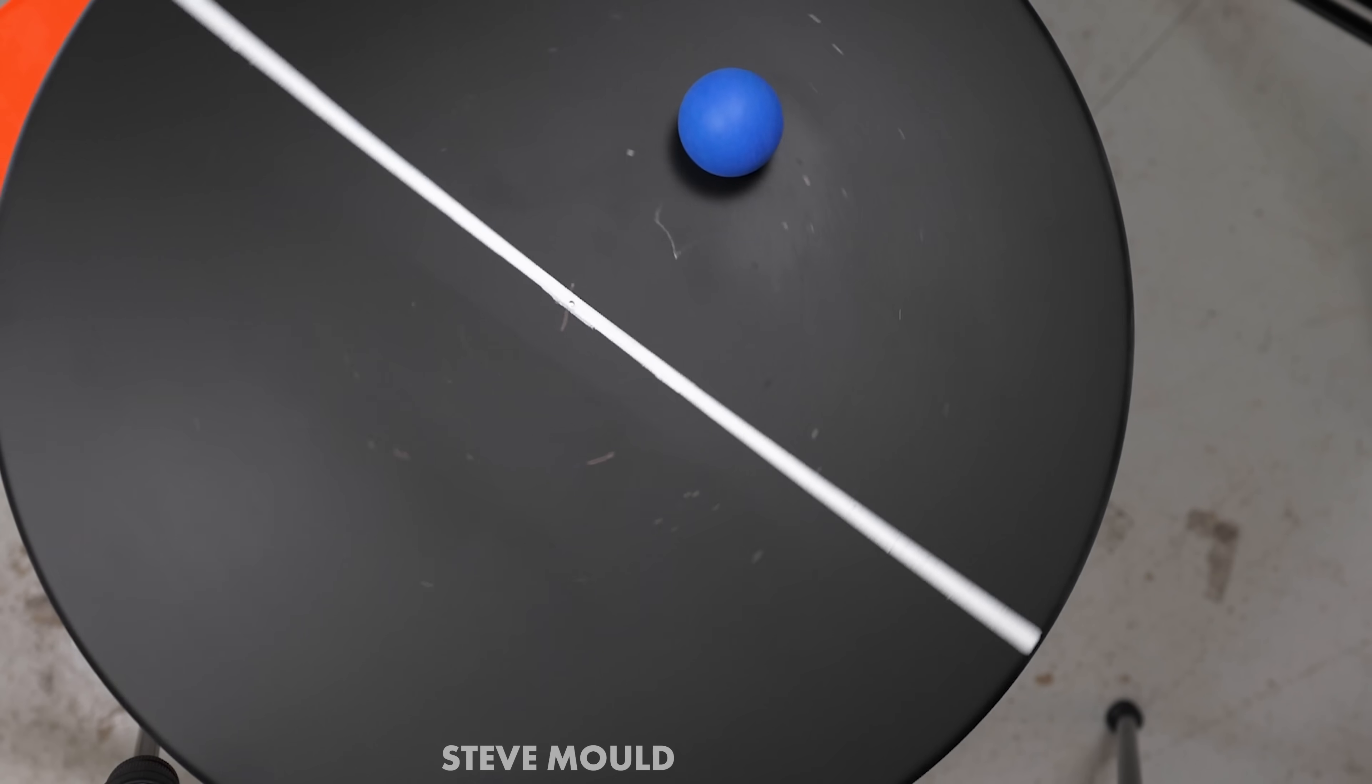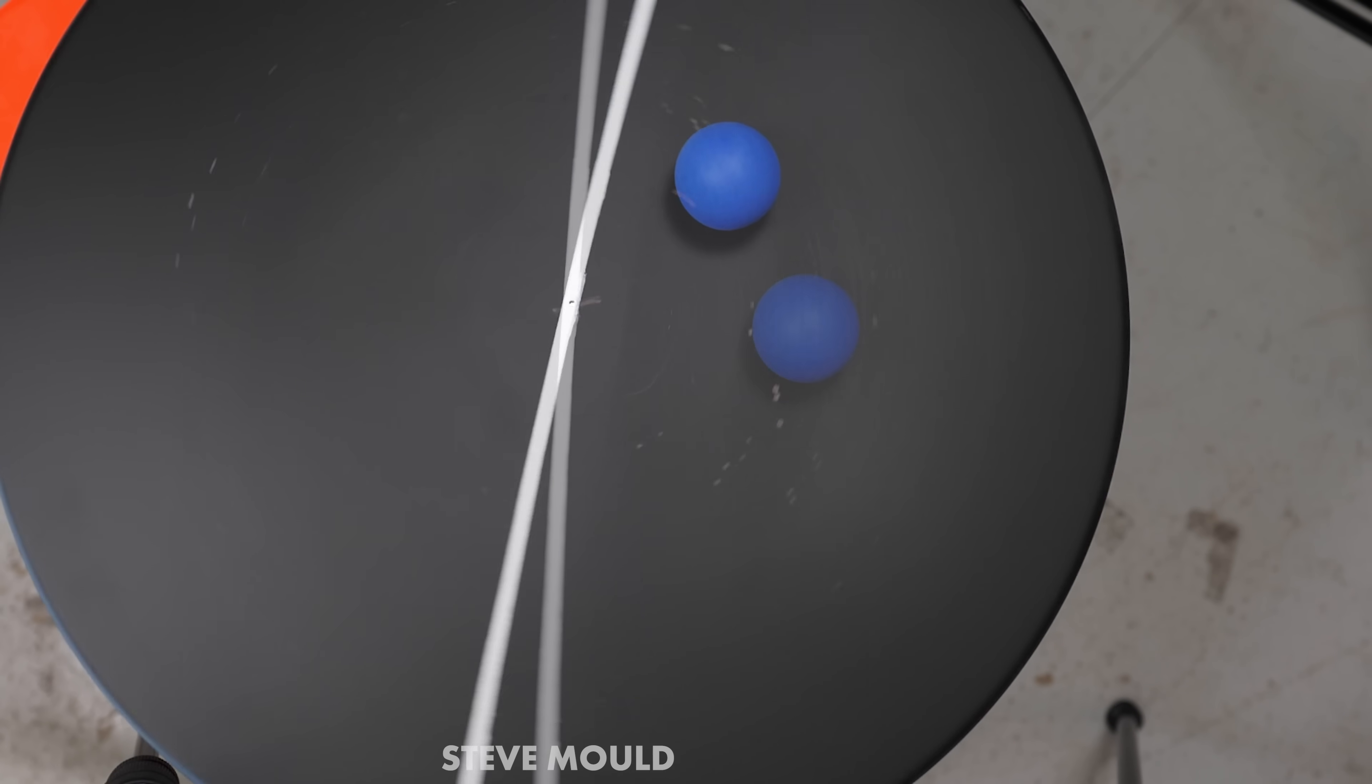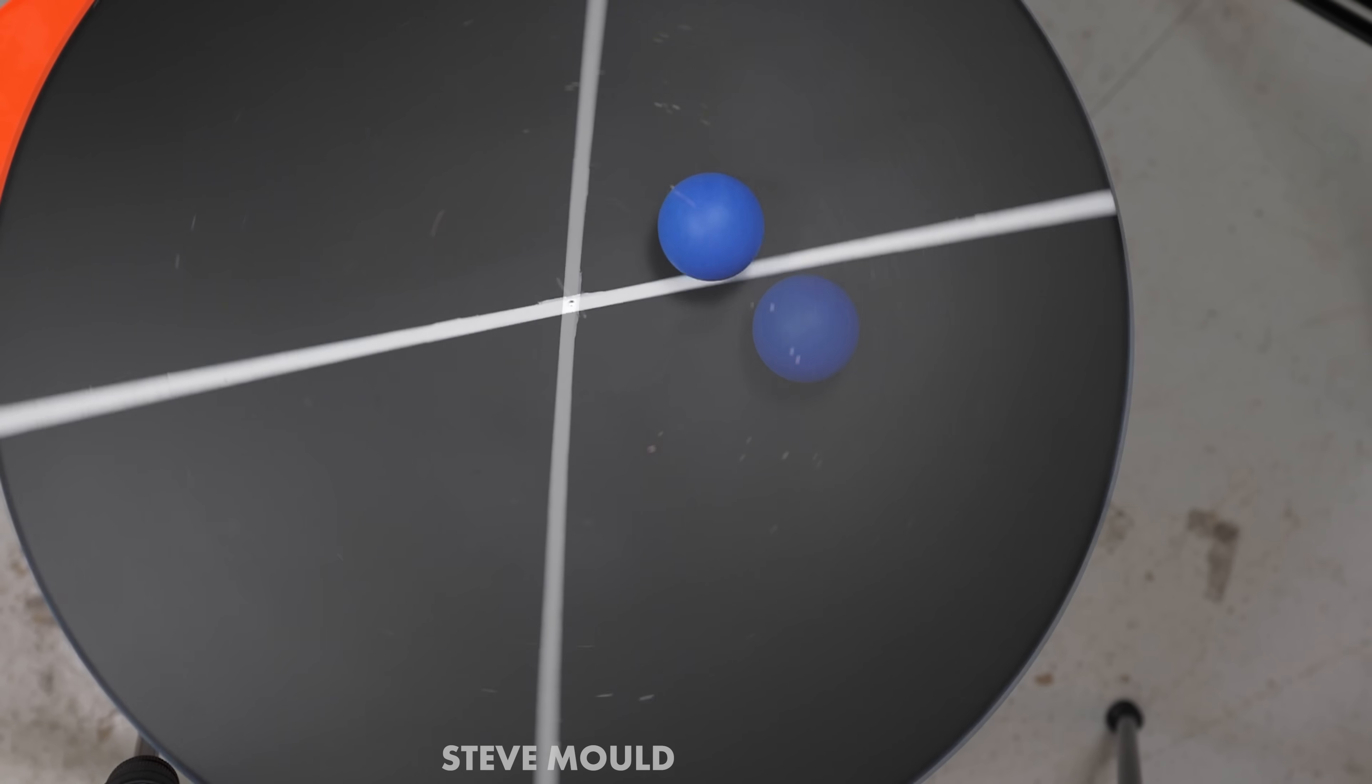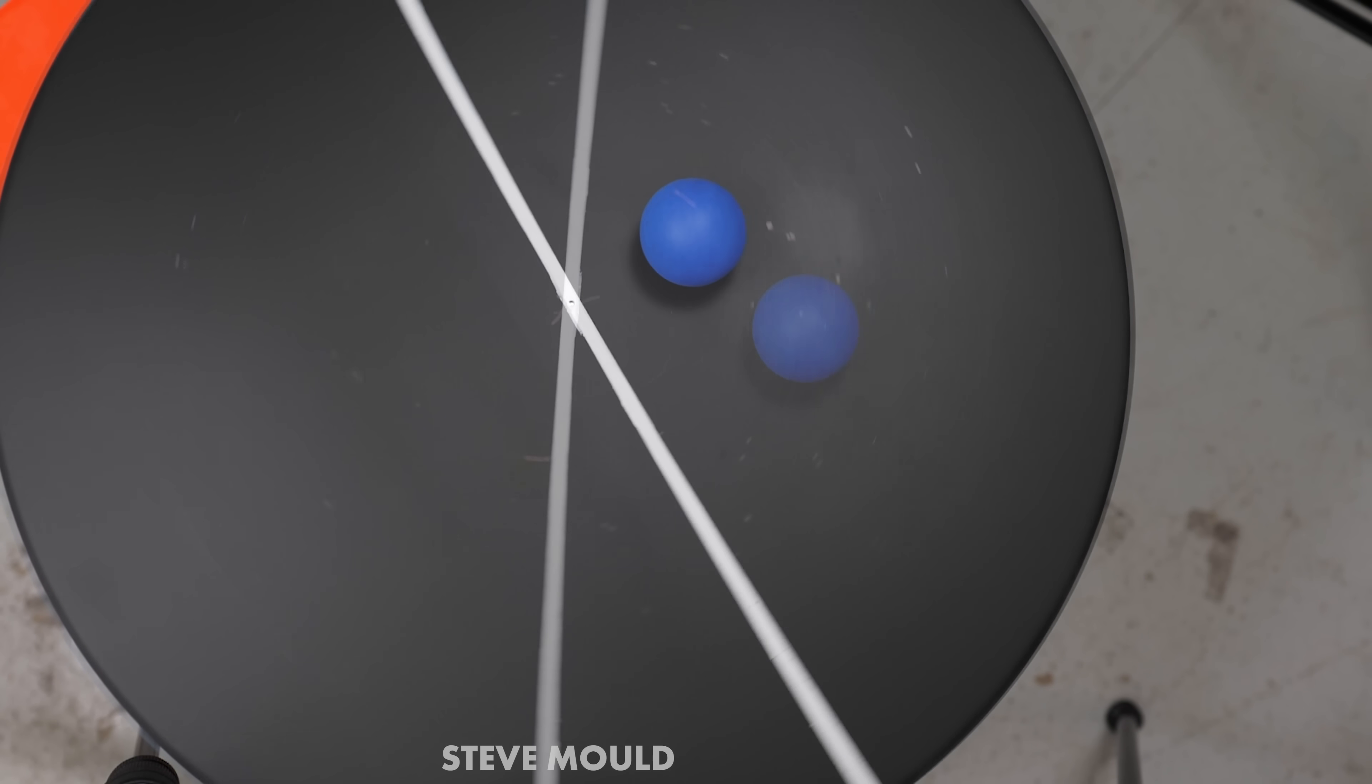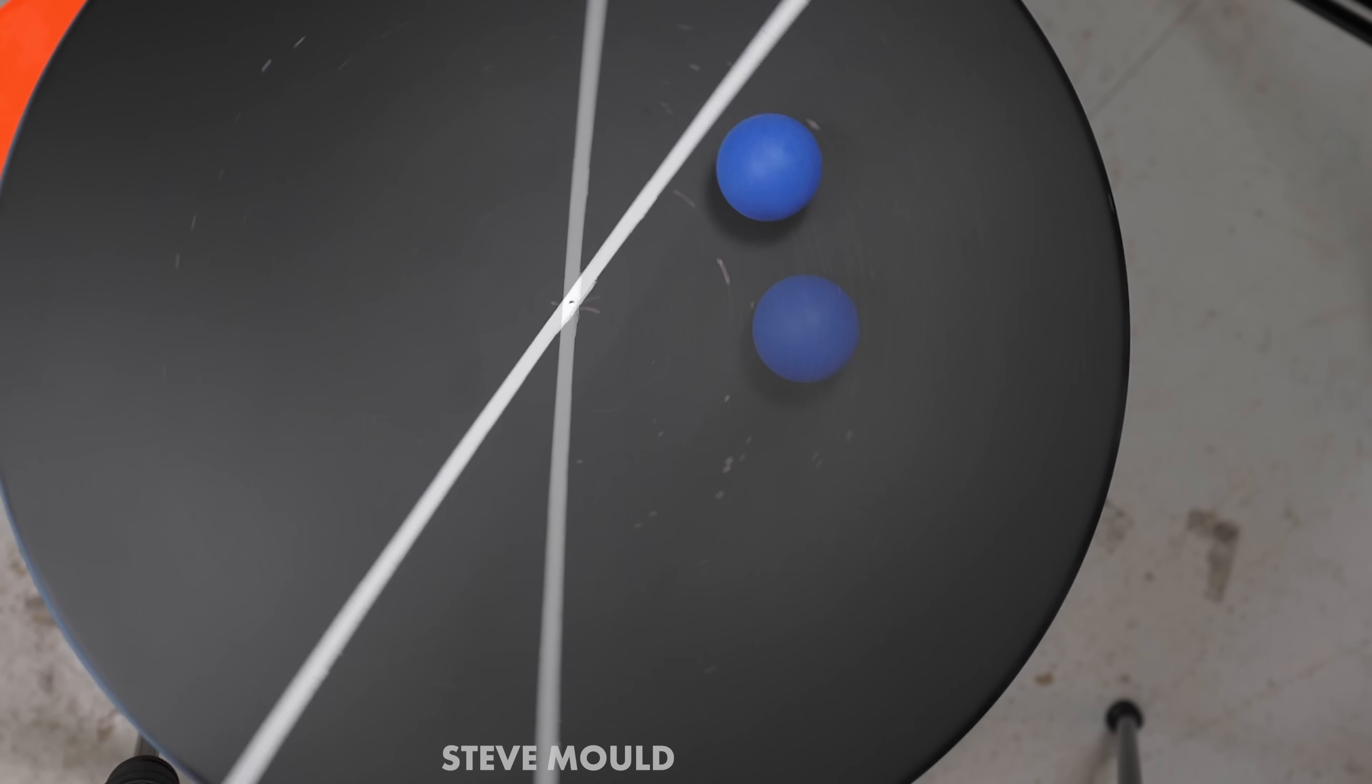Unless the ball is hollow, like this ping pong ball, in which case it's one, two, three, four, five. It's a five to two ratio. Why is that?